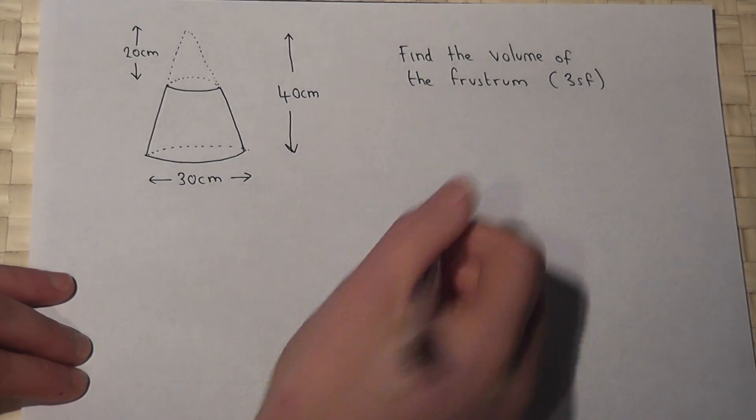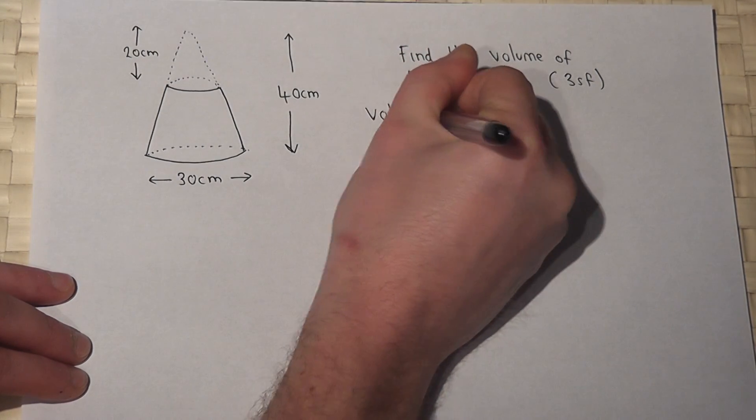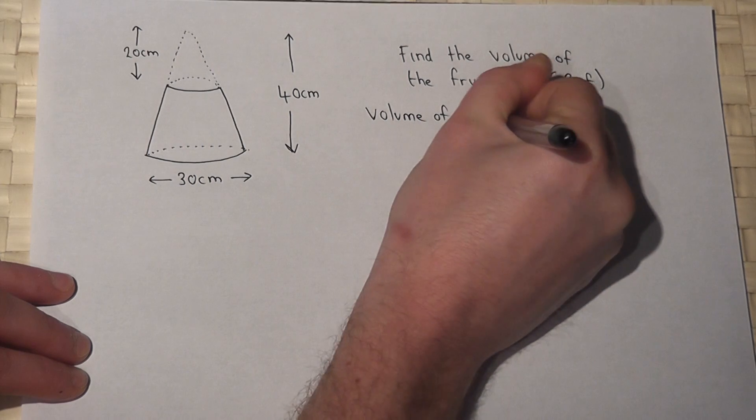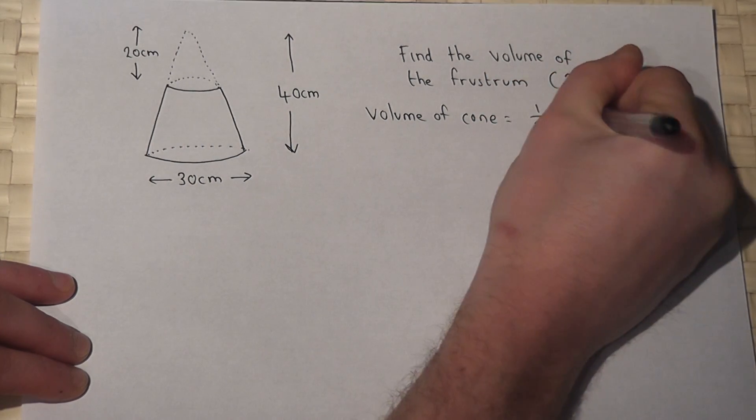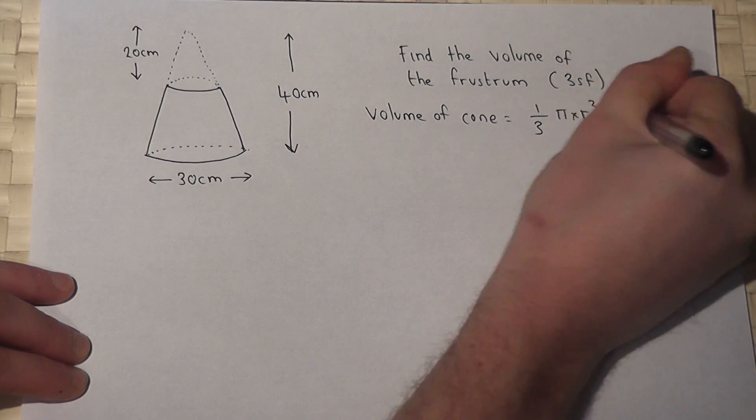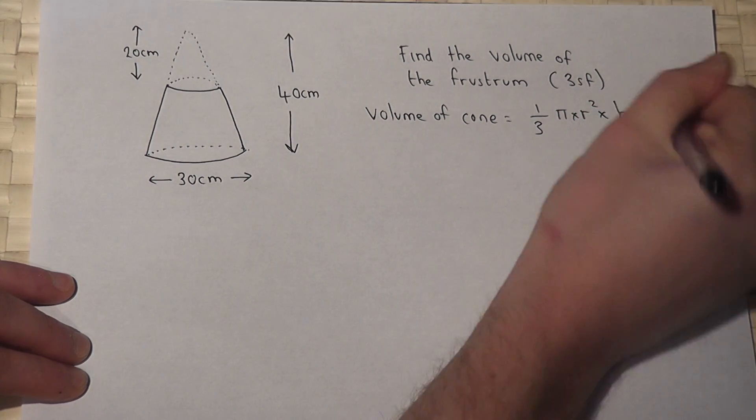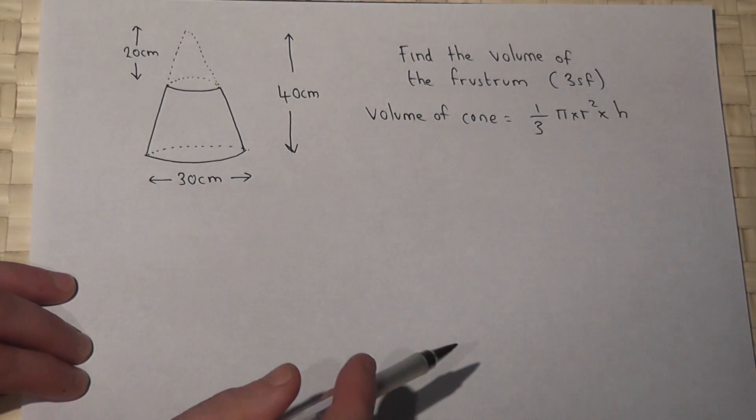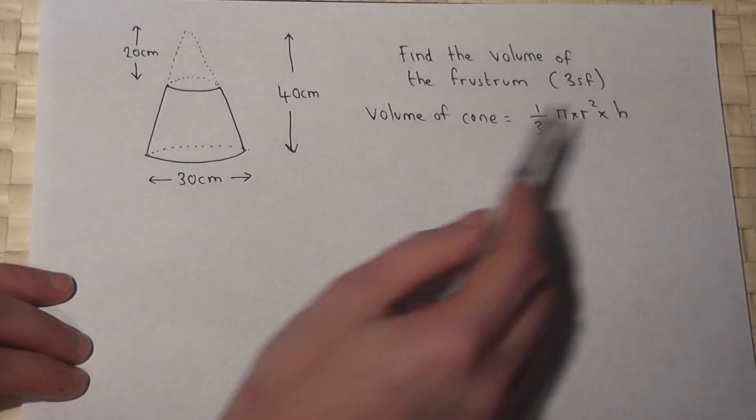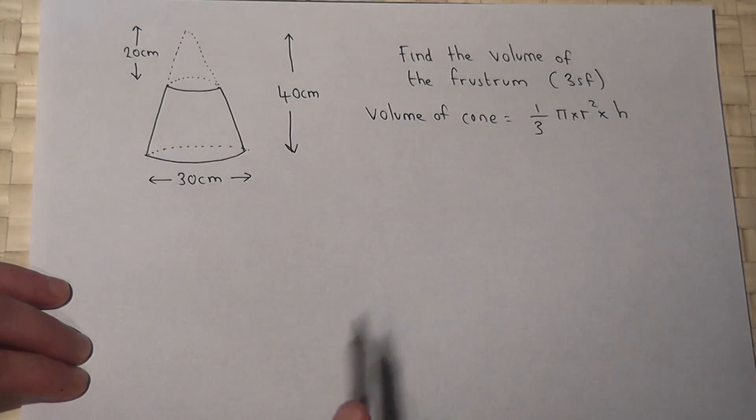Now we know the volume of a cone is given by one third pi times r squared times the height, where r is the radius of the base of the cone and h is the height of the cone.